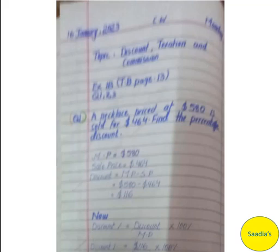Question number 1: a netlist priced at $5.80 is sold for $4.64. Find the percentage discount. $5.80 is the mark price and $4.64 is the selling price and we have to find the percentage discount. The percentage discount formula is: discount divided by mark price, multiplied by 100%. If we don't have the discount, we replace it with mark price minus selling price.